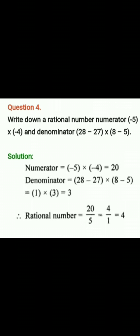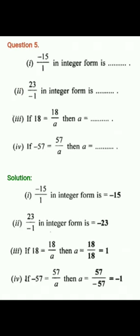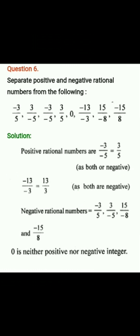Now we are going to talk about Question 5. (i) -15/1 in integer form is -15. (ii) 23/-1 in integer form is -23. (iii) If 18 = -18/a, then a = -1. (iv) If -57 = 57/a, then a = -1.